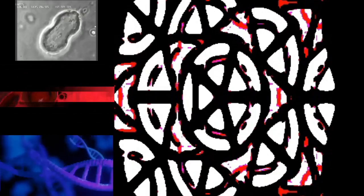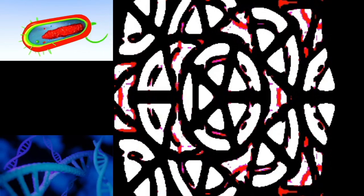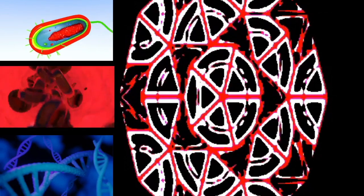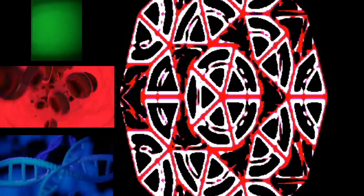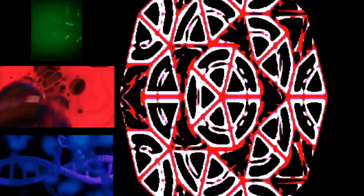Interphase. The mitotic phase is a relatively short period of the cell cycle. It alternates with the much longer interphase, where the cell prepares itself for the process of cell division. Interphase is divided into three phases: G1 (first gap), S (synthesis), and G2 (second gap).